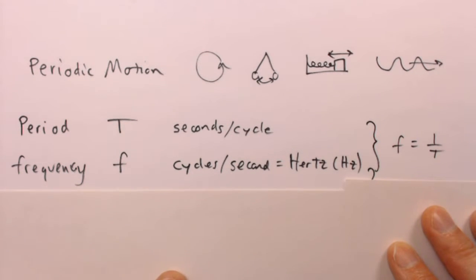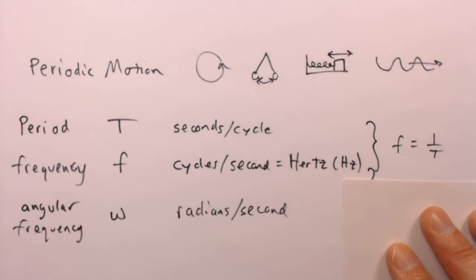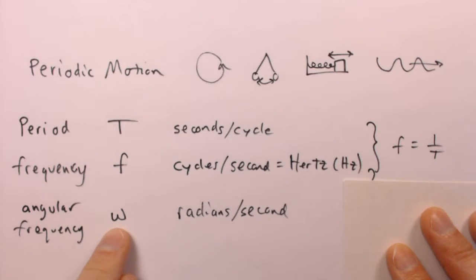Moving on to angular frequency. Here we have angular frequency. We use the Greek letter omega for this, not a W, and make sure that your W's and your omegas are distinct. The units for angular frequency are radians per second.